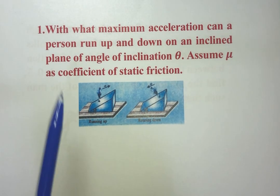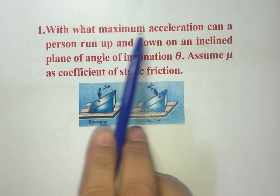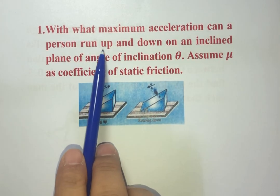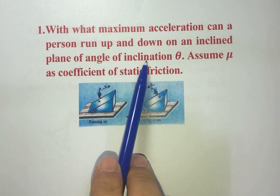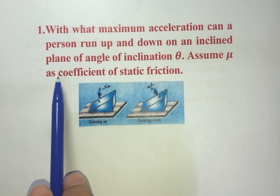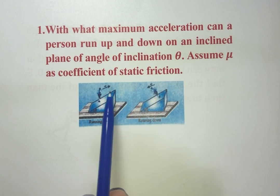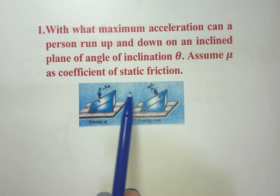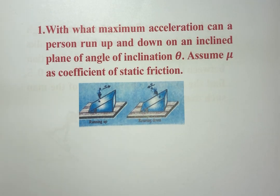Hello friends. Today we are going to do two questions. The first one: with what maximum acceleration can a person run up and down on an inclined plane of angle of inclination theta? Assume mu as the coefficient of static friction. We have an inclined plane and a person running up as well as down with acceleration a, and the angle of inclination is theta.